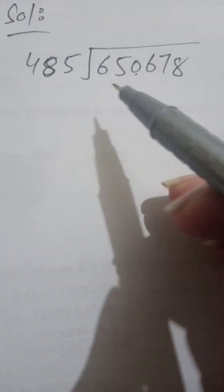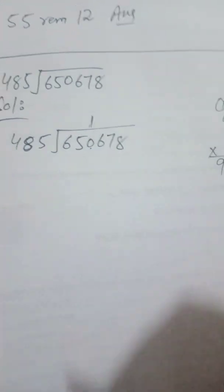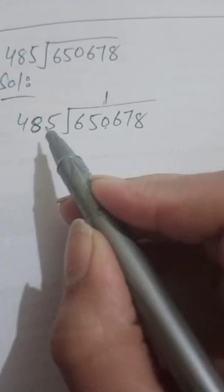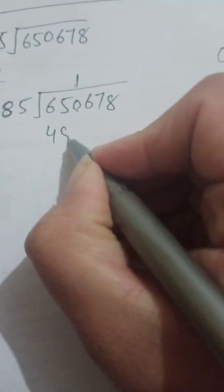If I take 485 one time it will be 485. If I take two times, let's check: 2×5=10 carry 1, 2×8=16 plus 1 is 17 carry 1, 2×4=8 plus 1 is 9. So 485×2=970, which is too much bigger than 650. That's why we multiply 485 one time. We put 1 in the quotient and write the product 485 below the 650.